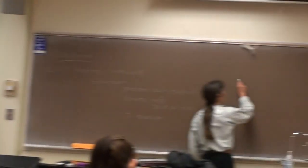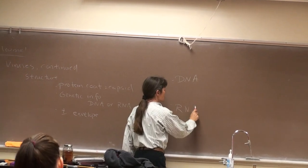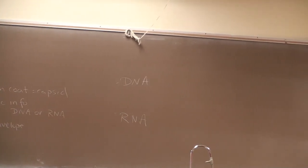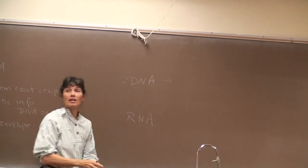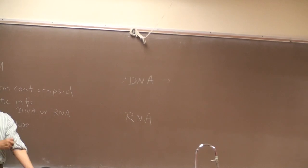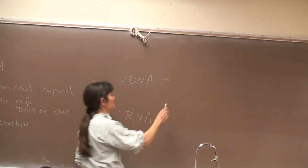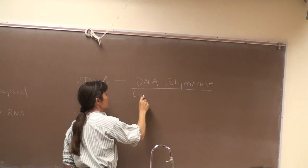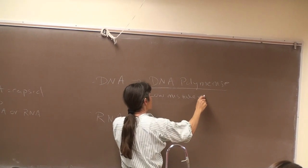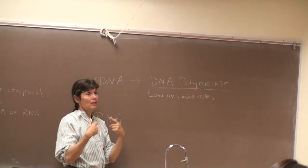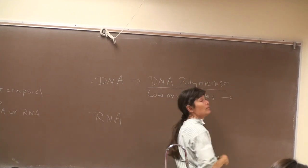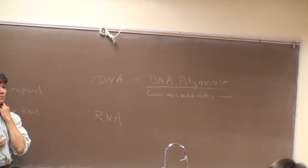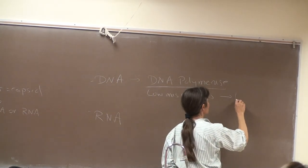I propose it's because of the genetic information and the enzymes that copy it. With DNA viruses, which enzyme copies viral DNA? DNA polymerase — and DNA polymerase proofreads and edits, so it has a relatively low mistake rate. Each mistake is considered a mutation. So DNA viruses, since their genetic information is copied using DNA polymerase which makes very few mistakes, have a relatively low mutation rate.